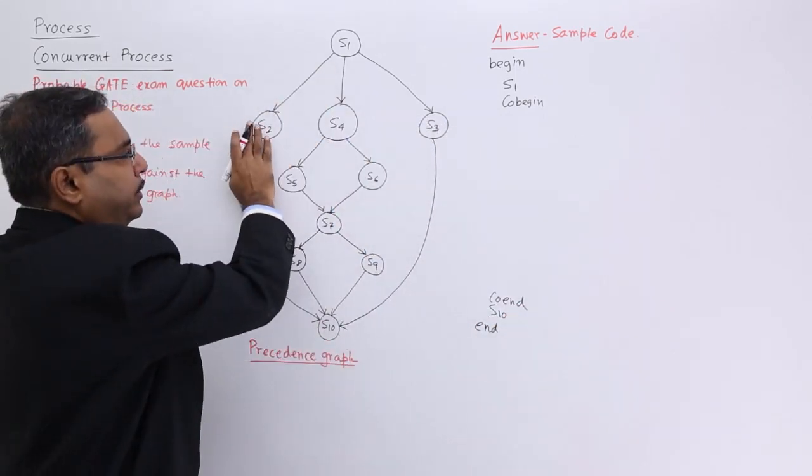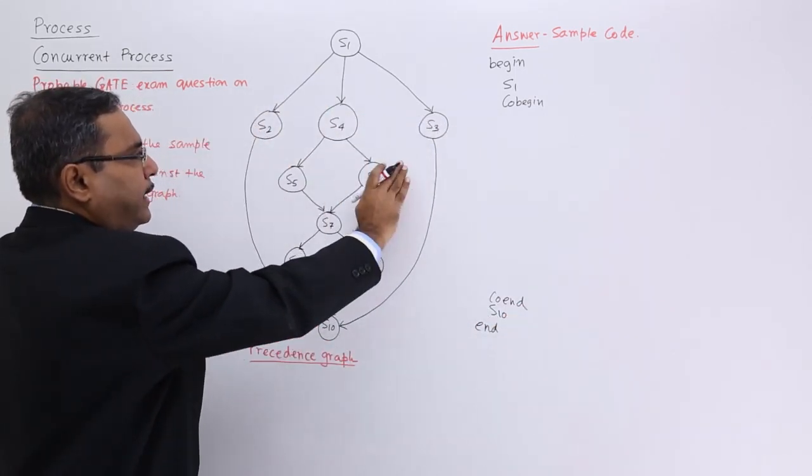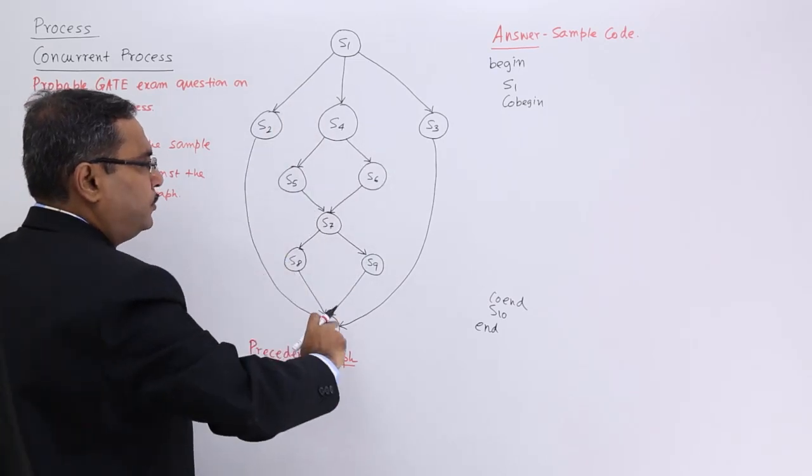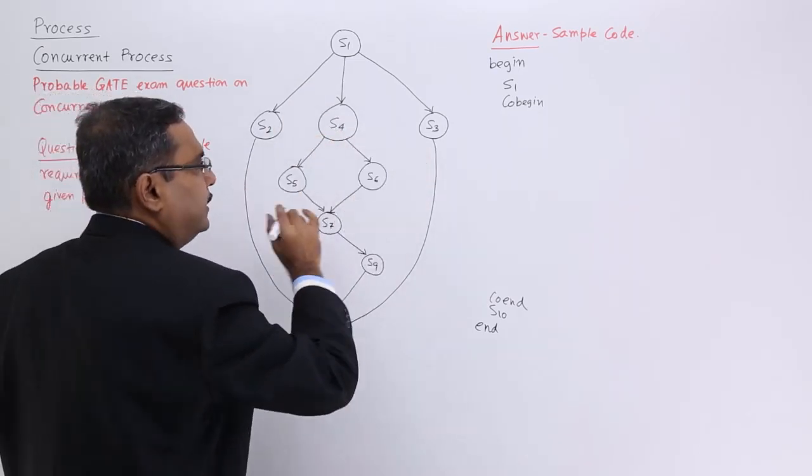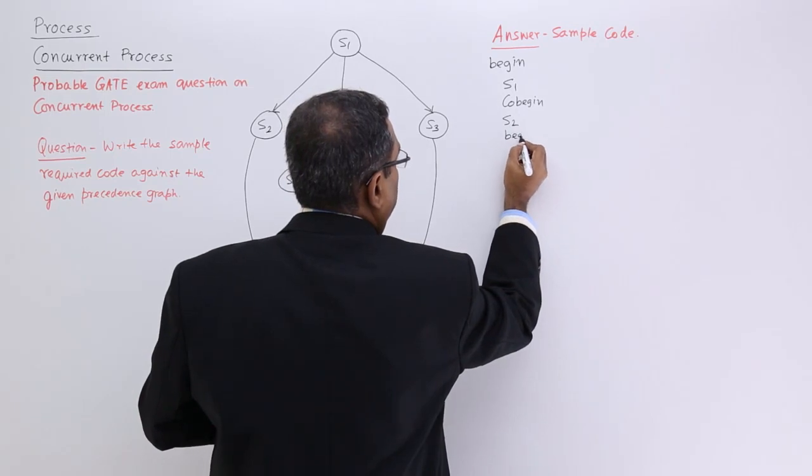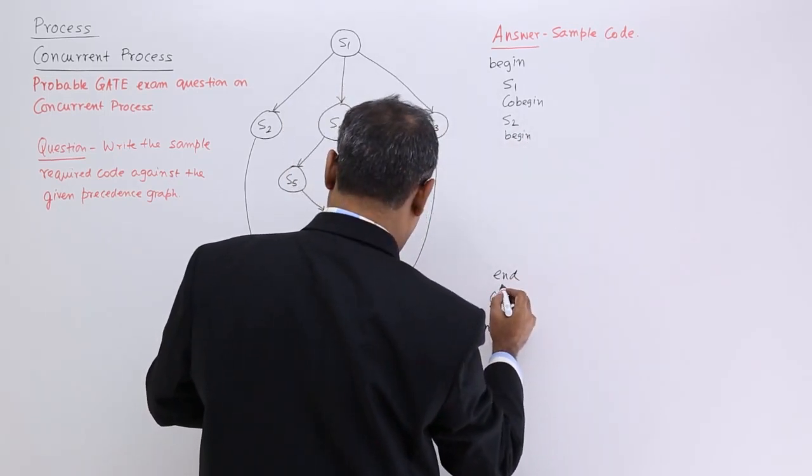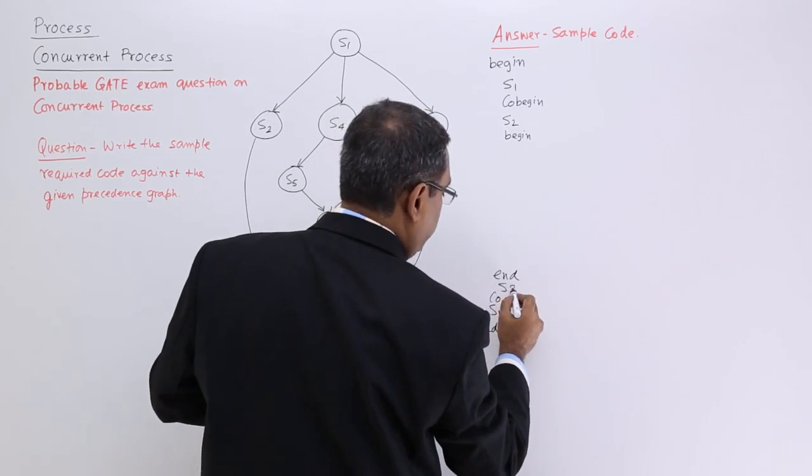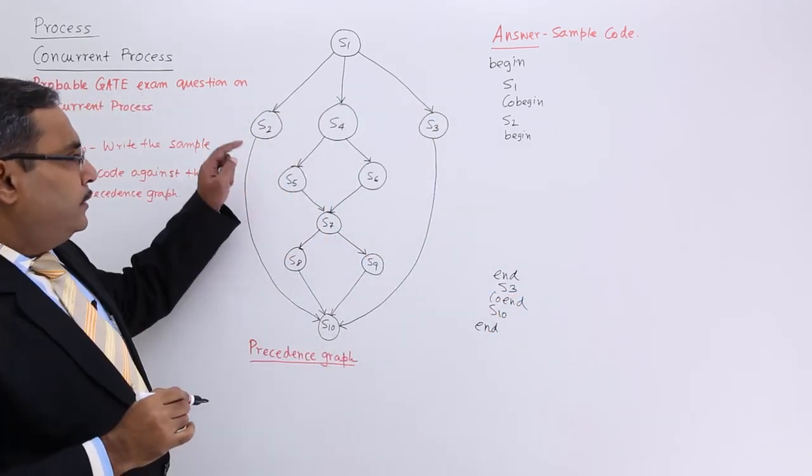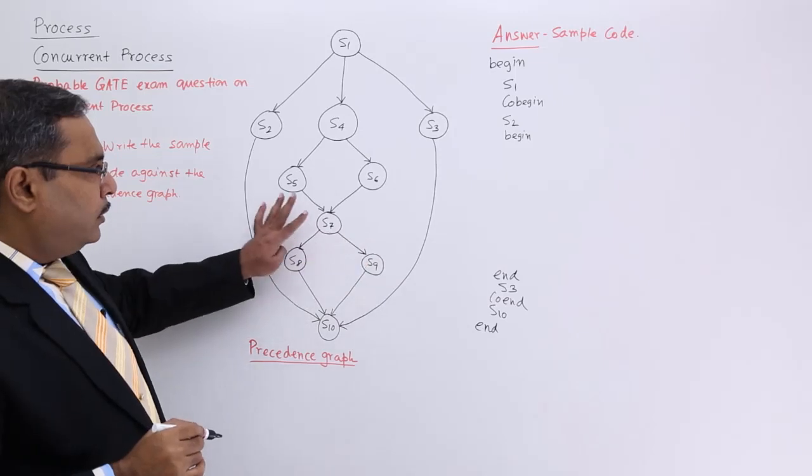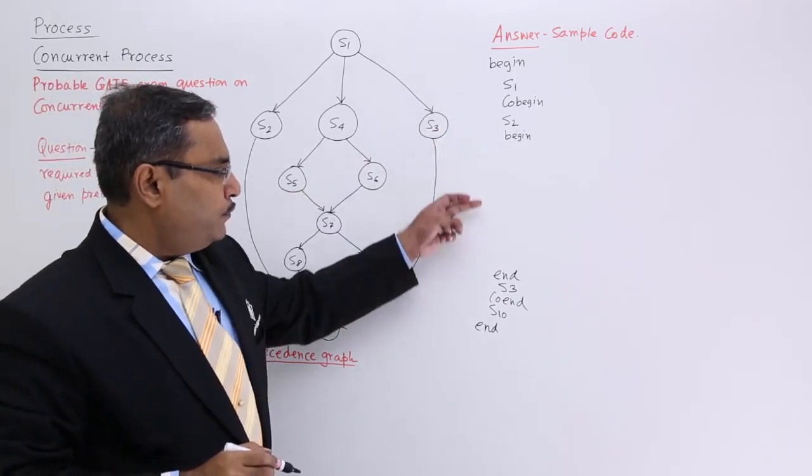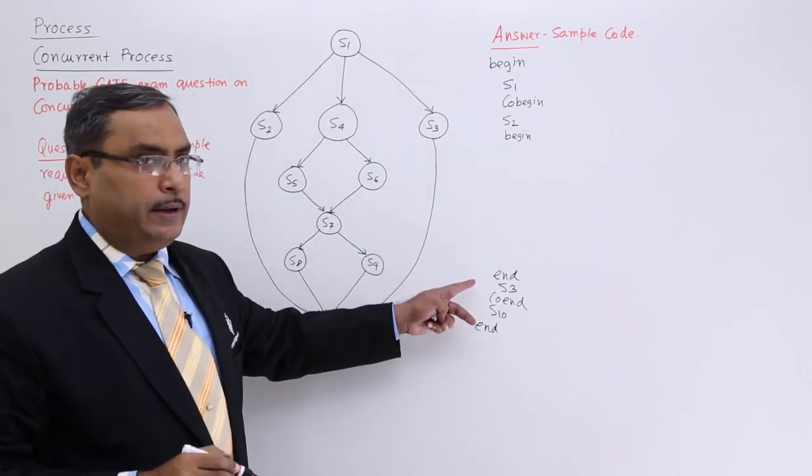Co-begin, co-end means these will be working in parallel. So S2, then begin, then S and then I shall have S3. So S2, whole block and S3 will be coming like this. Here I will be having a sequence.